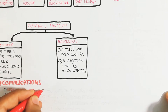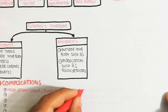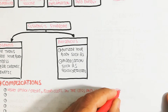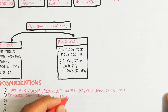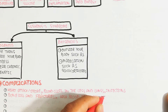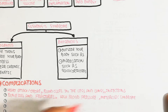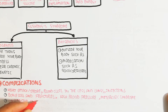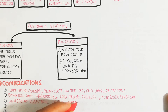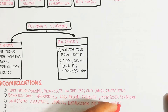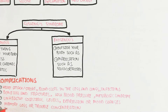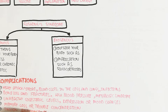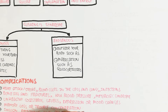Complications of Cushing's syndrome include heart attack, stroke, blood clots in the legs and lungs, infection, bone loss and fractures, high blood pressure, metabolic syndrome, unhealthy cholesterol levels, depression or mood changes, memory loss or trouble concentrating, and insulin resistance. In pre-diabetic persons, type 2 diabetes mellitus can also occur. We will understand the pathophysiology in the next section of this video.